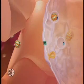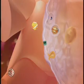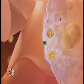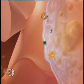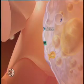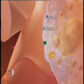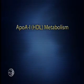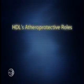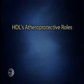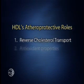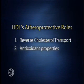Excess ApoB-containing particles can invade the arterial wall, become oxidized, and be taken up by macrophage scavenger receptors, creating the foam cells that lead to atheroma. Now let's examine the complementary ApoA1 or HDL pathway that protects from atherogenesis. HDL's two major atheroprotective roles are reverse cholesterol transport and properties which prevent LDL oxidation, a key trigger for atherogenesis.